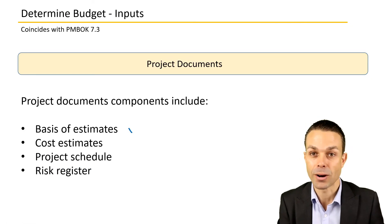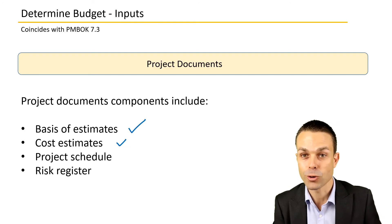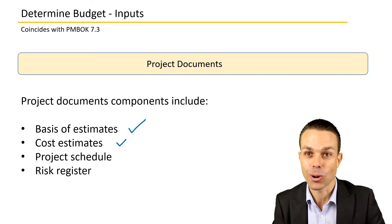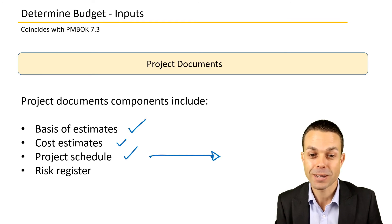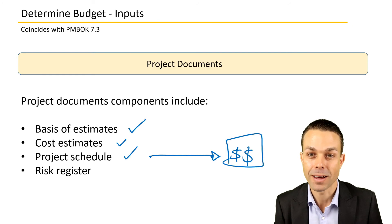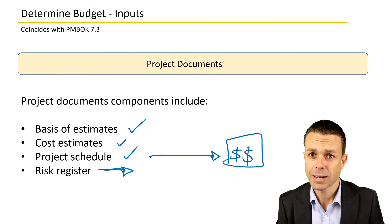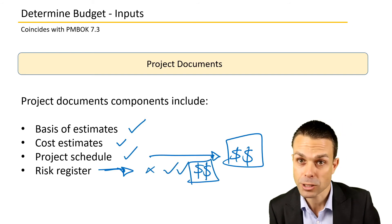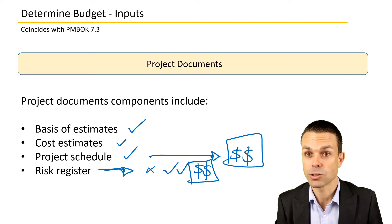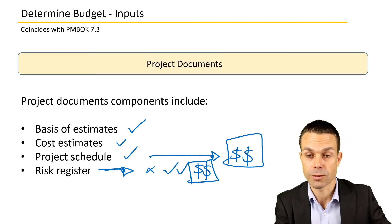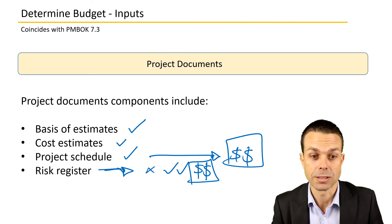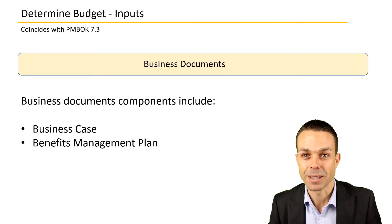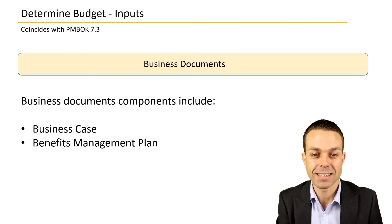Project documents are also an input: we have the basis of our estimates and the cost estimates themselves, developed through analogous or parametric estimating techniques. The project schedule tells us how long we'll be needing resources, which determines the money involved. Our risk register tells us whether we need to avoid certain risks or call out additional ones — cost-based risks like currency fluctuations, hedging requirements, country differences, union requirements, or specific hour constraints — all of which are inputs for determining the budget.